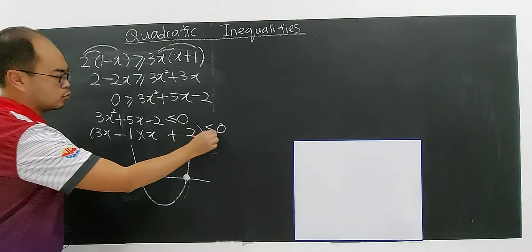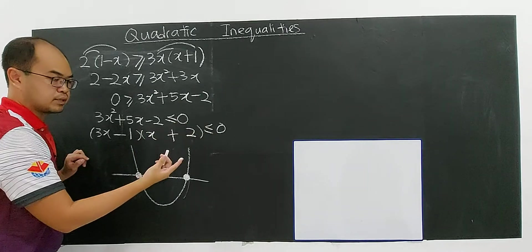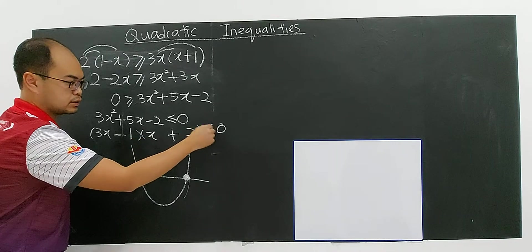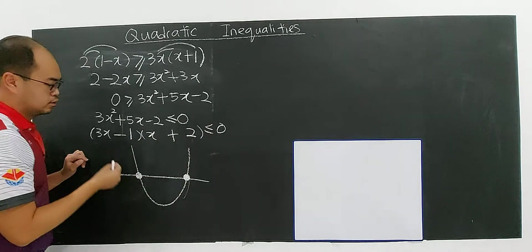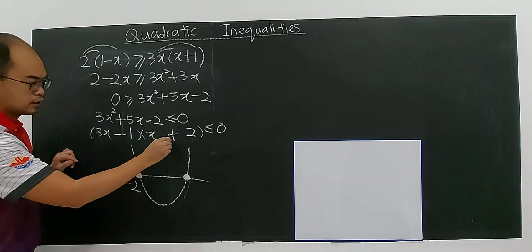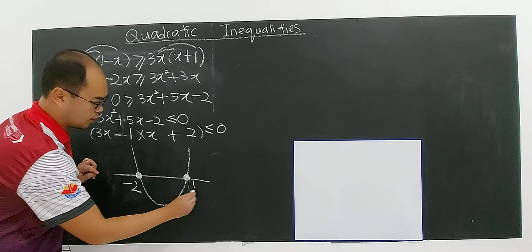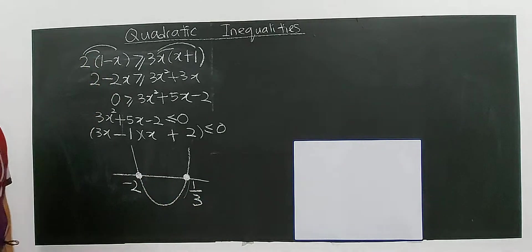Because it can be equal to 0. If you put negative 2, it can be accepted. Negative 2 can be accepted. Because it can be 0. So 1 over 3 also. You have negative 2. This one, if it equals to 0, it will be negative 2. And this one will be 1 over 3.